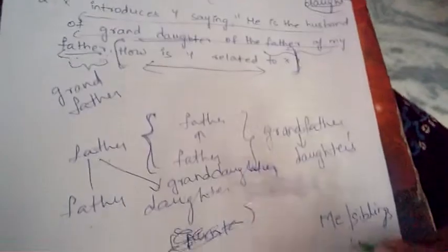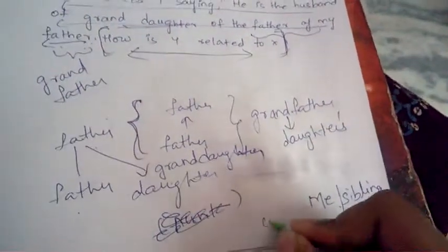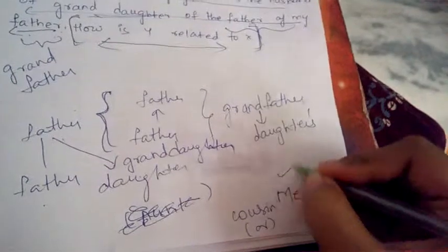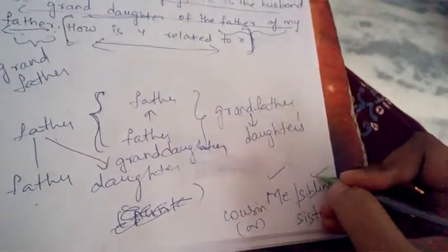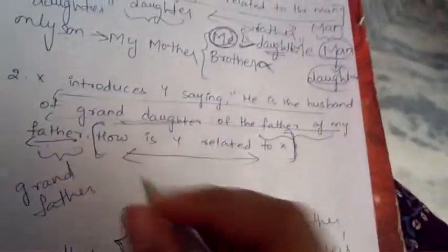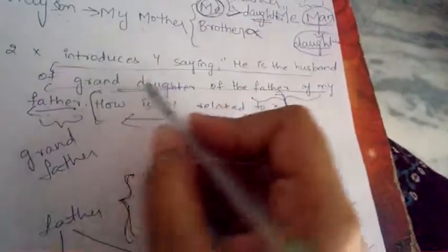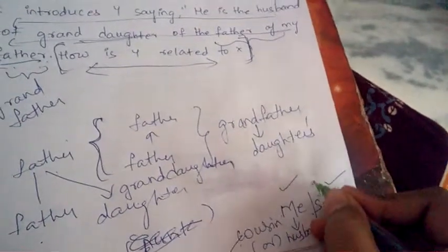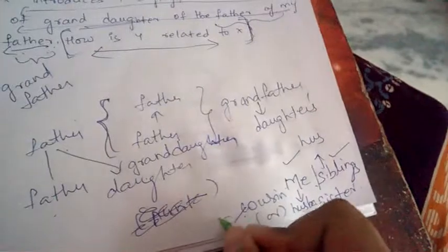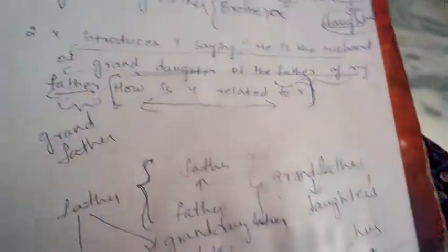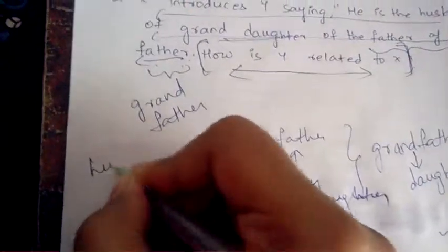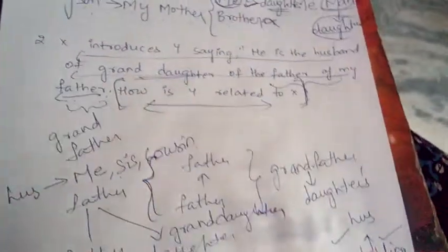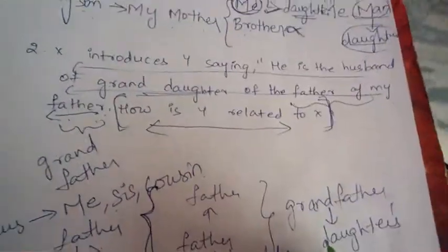My grandfather's granddaughter could be me, or my sister, or my cousin — there are several possibilities. Next: 'husband of granddaughter' means my husband, or my sister's husband, or my cousin's husband. So there are three cases possible for Y: my husband, my sister's husband, or my cousin's husband.